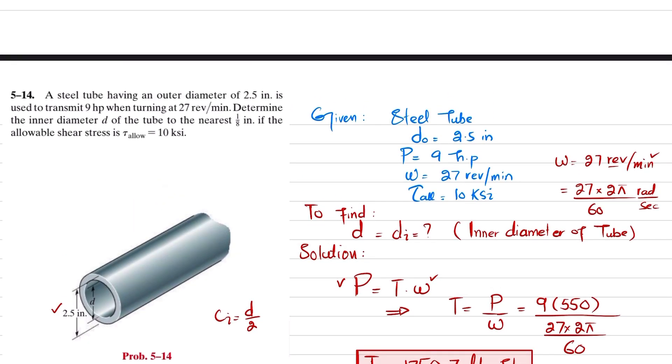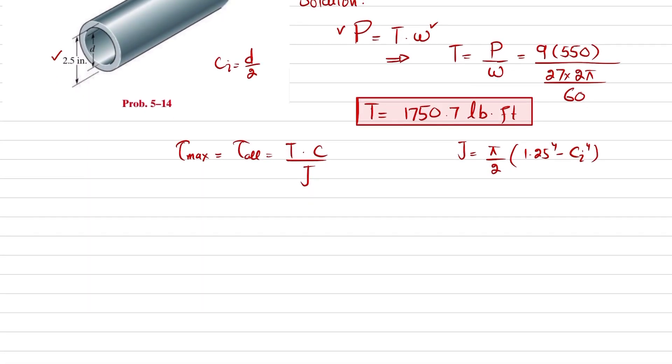Because c_inner will be equal to d divided by 2. So you can just put the values: maximum allowable shearing stress is 10 ksi, so 10 times 10^3 is equal to torque is 1750.7, and we will multiply it by 12 to convert this into pound-inches, multiply by c maximum which is 2.5 divided by 2.